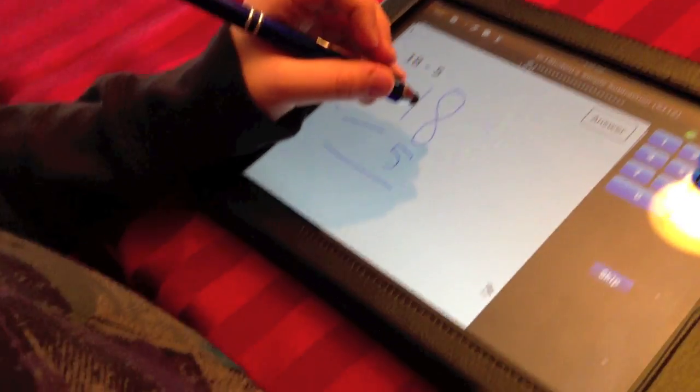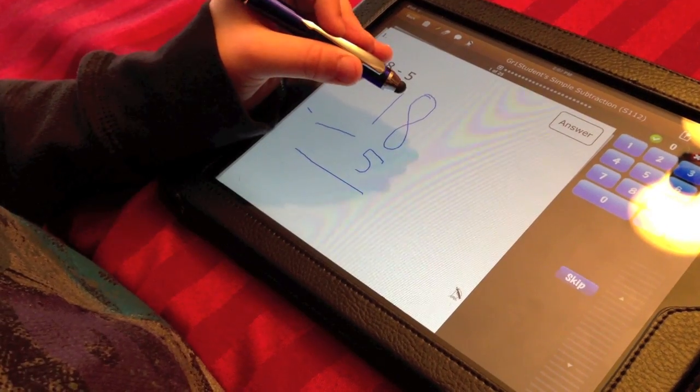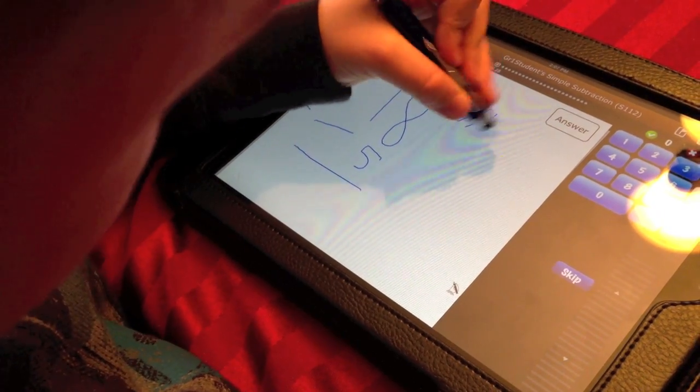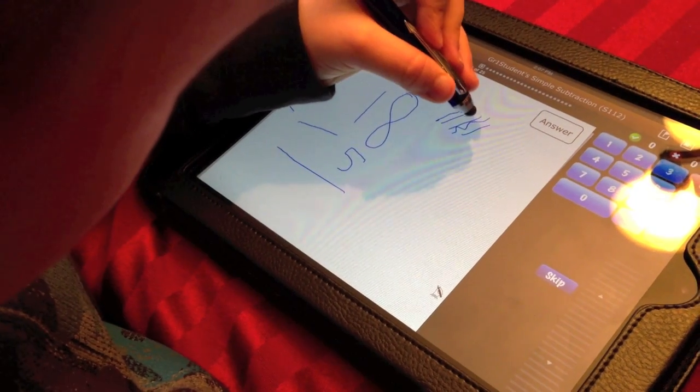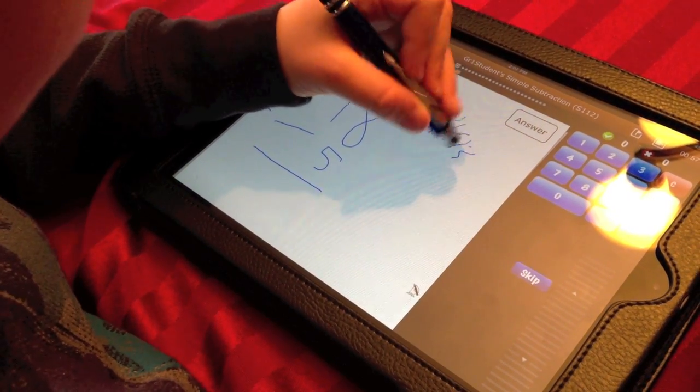Now, see how it's lined up? You subtract 5 from 8. So I have 8 dots. 7, 8. I'm sorry they're squiggly, but I don't know why.